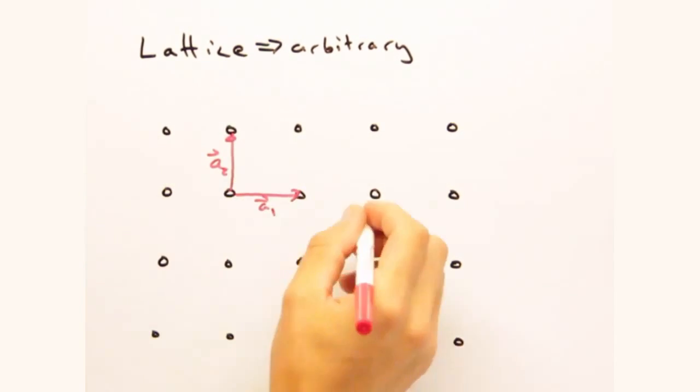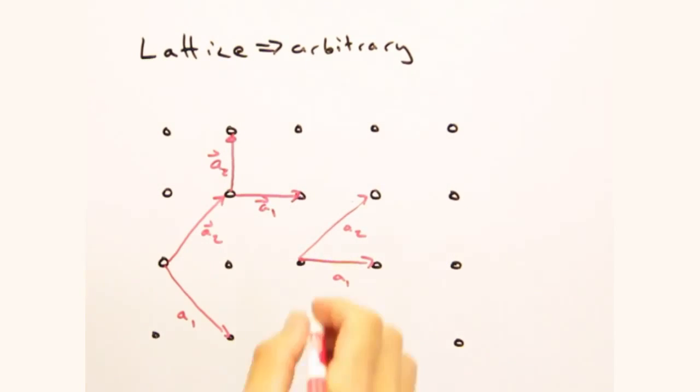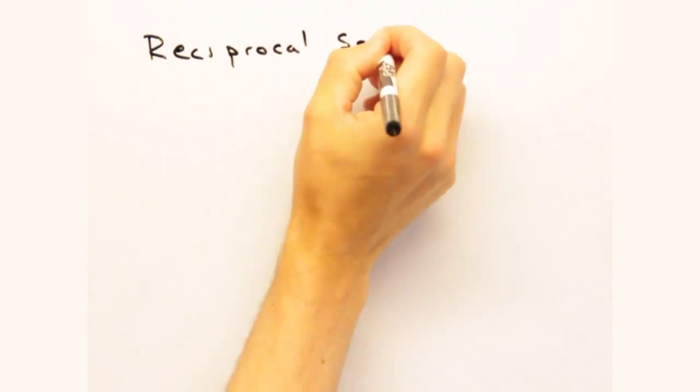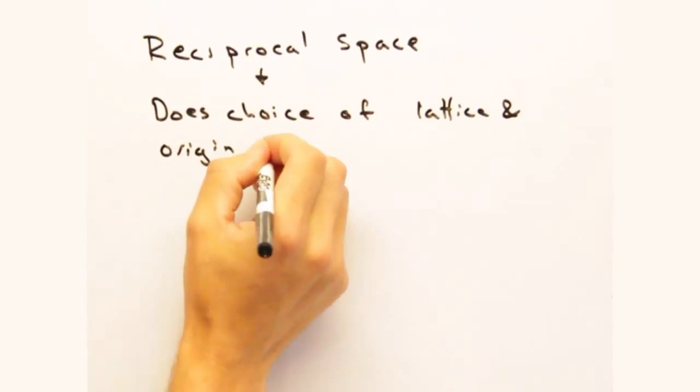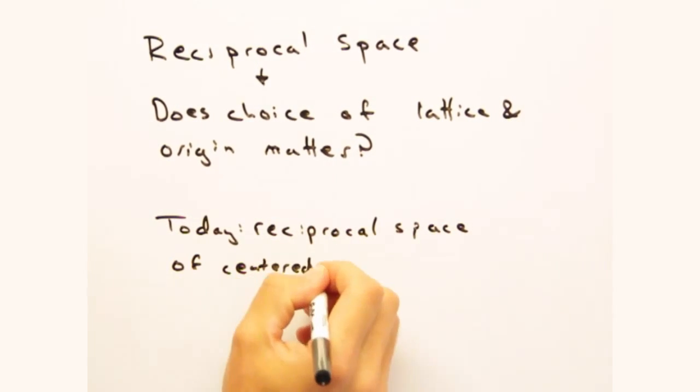Okay, so earlier when we originally constructed our real space lattices, it felt almost arbitrary how we specified our origin and lattice vectors. Today we're going to take a look at the reciprocal space for centered cells and see if those choices mattered.